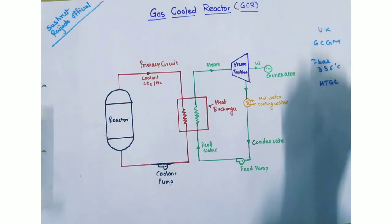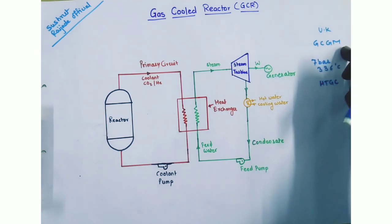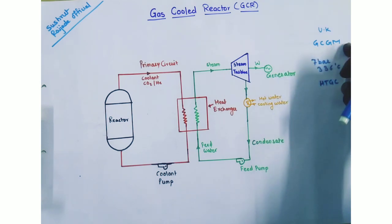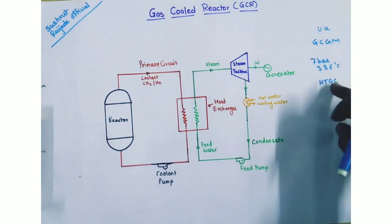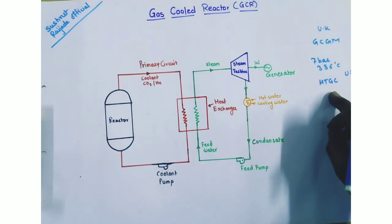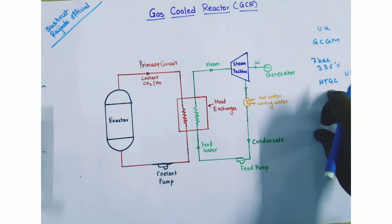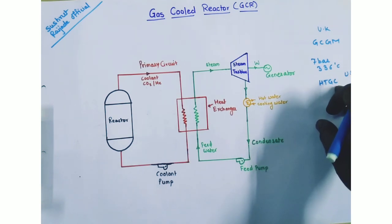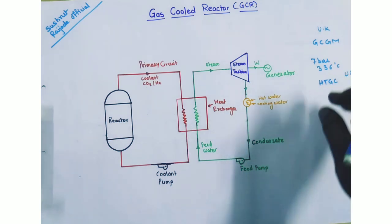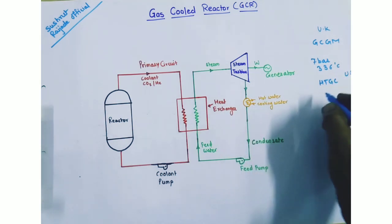UK developed the GCGM, that is gas cooled graphite moderated reactor, and USA developed the HTGC, that is high temperature gas cooled reactor. This HTGC uses U-233, uranium-233, as a fissile material and thorium as a fertile material.